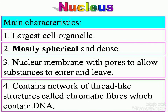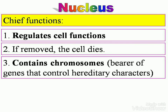Now let's look at the nucleus. Main characteristics: it is the largest cell organelle — remember this. It is mostly spherical and dense. It has a nuclear membrane with pores to allow substances to enter and leave, and contains a network of thread-like structures called chromatin fibers, which contain deoxyribonucleic acid — DNA. Chief functions: it regulates cell functions; if removed, the cell dies. It contains chromosomes and is the bearer of genes that control hereditary characters.